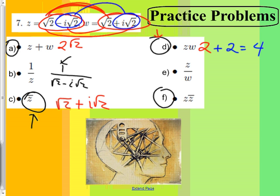For E, Z times its conjugate — isn't W actually the conjugate of Z? So Z times its conjugate is the exact same thing as Z times W, and the answer is also four. If you didn't notice they were conjugates, you might have just redone the problem and realized it came out to four again.